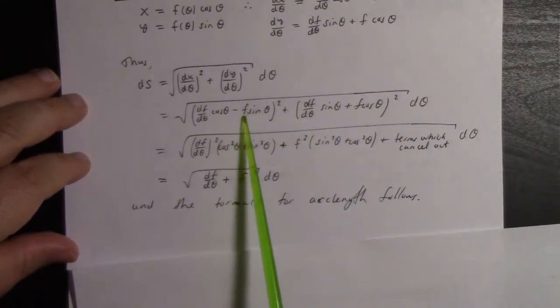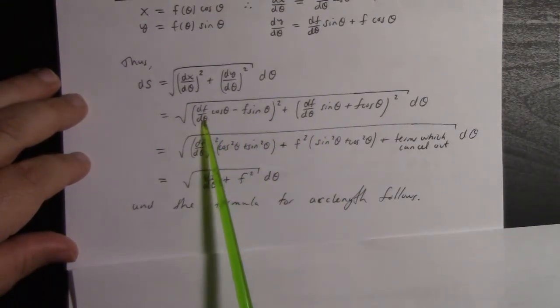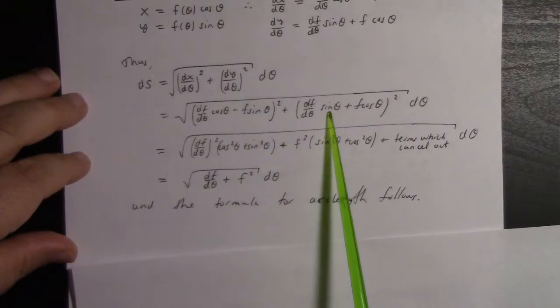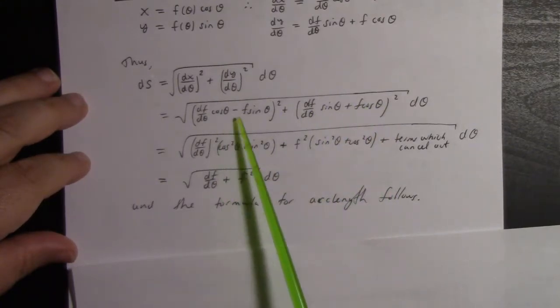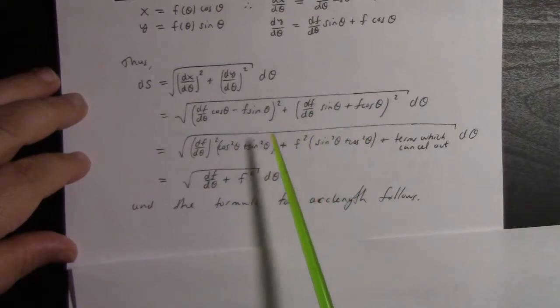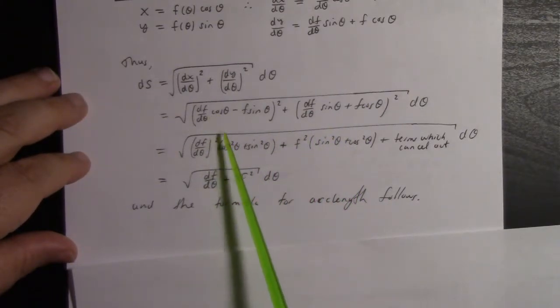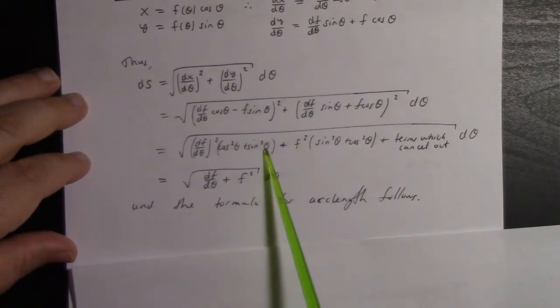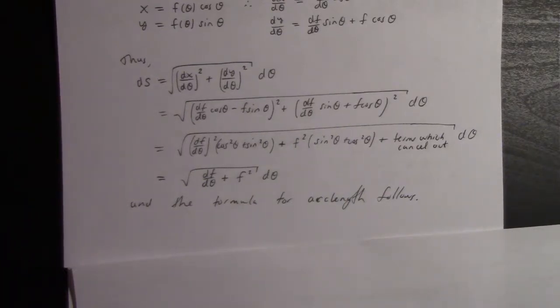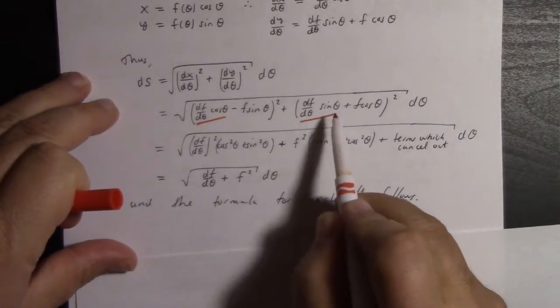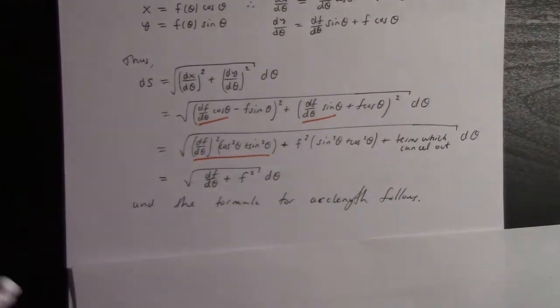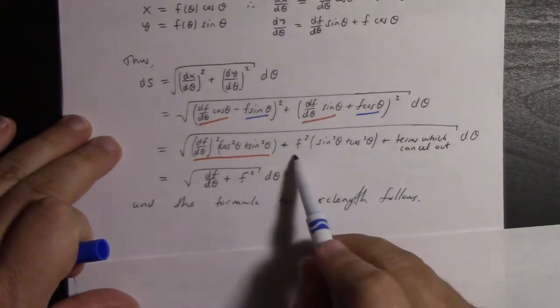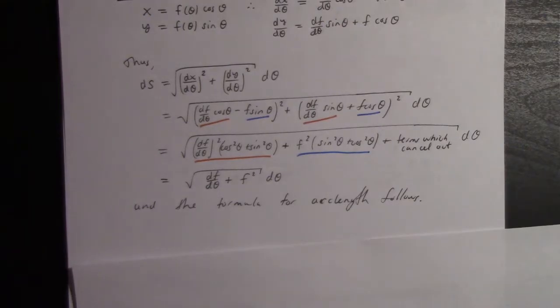When we do that squaring, we get a cross term of f(df/dθ)sin(θ)cos(θ) times -2 from this one, and f(df/dθ)sin(θ)cos(θ) times +2 from this term. So the -2 and +2 cancel. We're left with the squaring terms: (df/dθ)cos²(θ) and (df/dθ)sin²(θ). I'll do some color coding here.